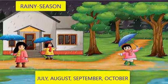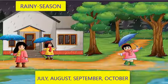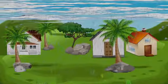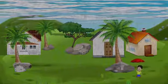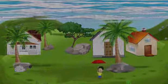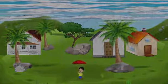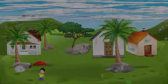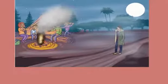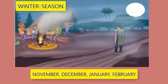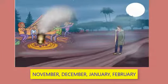In the rainy season, we have heavy rainfall and heavy winds blowing. If we want to go out in the rain, we should carry an umbrella. After the rainy season, we have winter in the months of November, December, January, and February.